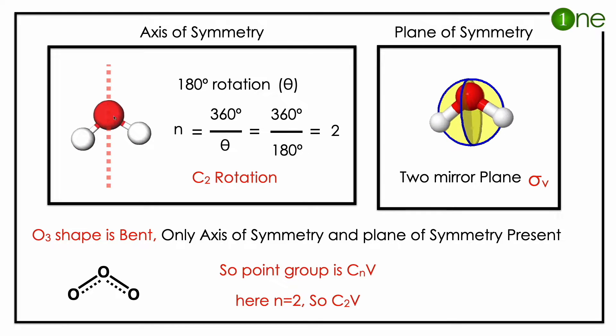Here it has an axis of symmetry. Axis of symmetry means when you rotate the molecule, you will get the same molecule again. Here if you rotate 180 degrees, you will get the same molecule.